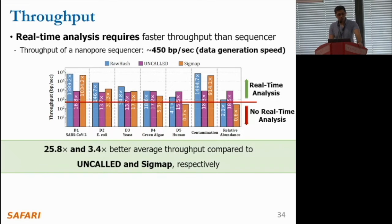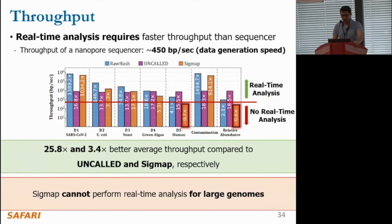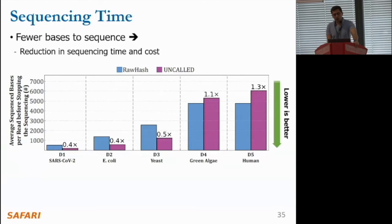To achieve real-time analysis, the computational mechanism must be faster than the throughput of a nanopore sequencer. If a bar falls below the red line on this figure, it indicates a failed real-time analysis due to slower analysis than the nanopore generates data. We observe that RawHash provides 25.8 times and 3.4 times better average throughput compared to UNCALLED and Sigmap respectively, essentially achieved by efficient similarity search. We also find that Sigmap cannot perform real-time analysis for large genomes due to costly distance calculation.